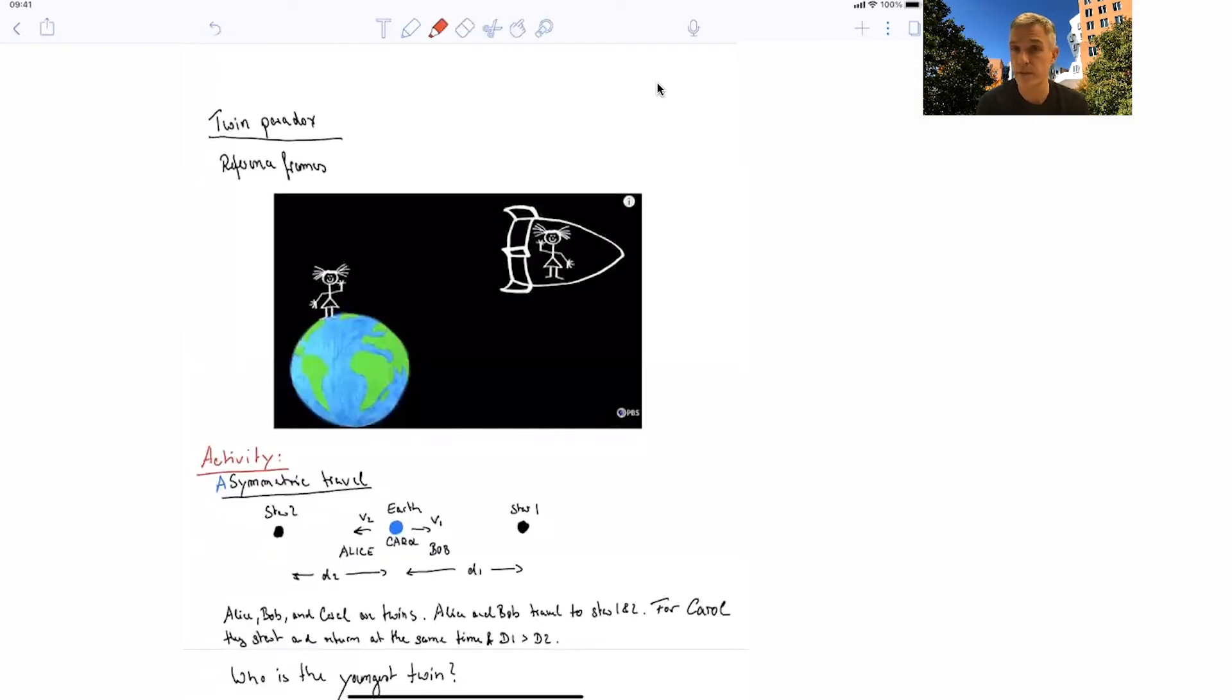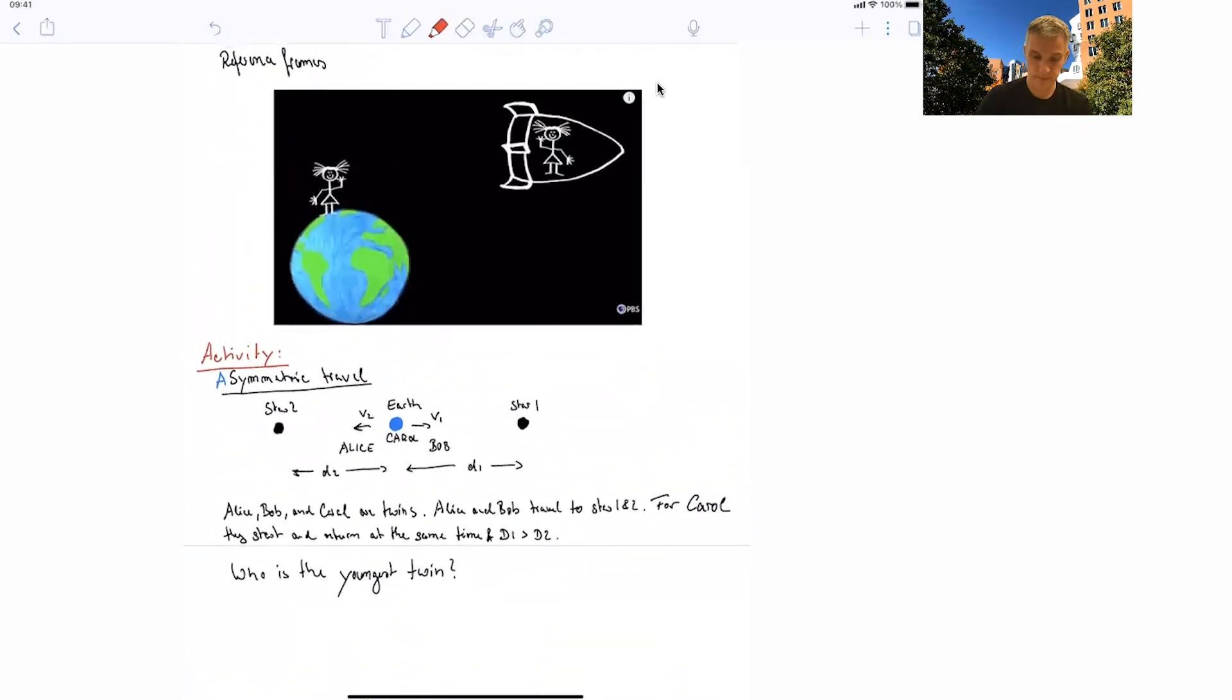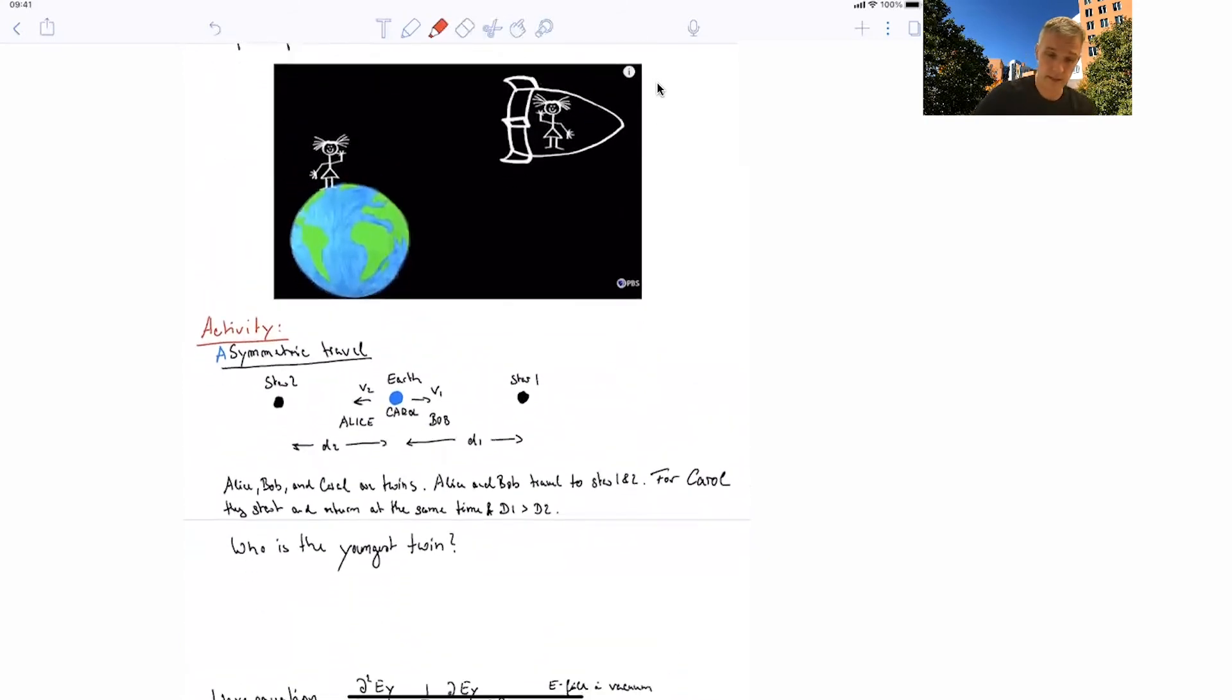So again, I invite you to just work this out. You can use some numbers if you want a quantitative answer, or you can just reason about it. And so the answer here is that Bob is the youngest of the three once they return to Earth. And the reason for this is the distance he has to travel is the longest. Hence, the velocity he has to travel in is the largest. And hence, the effect of time dilation for him is the biggest. And therefore, he's going to be the youngest of the three.